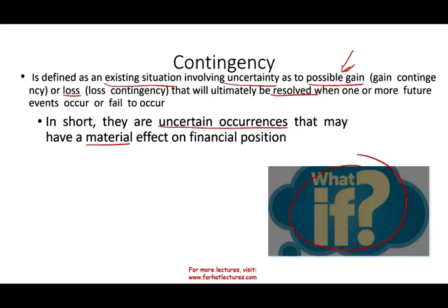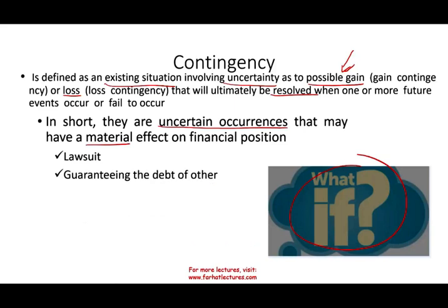These are uncertain occurrences that might have a material effect, and users are interested in that material effect. Before they invest in your company, they want to know — if that happened, how would it affect them? If we have to pay a large lawsuit, what's going to happen to cash flow? Examples of contingencies include lawsuits, guaranteeing the debt of another company, environmental obligations, and environmental liabilities.